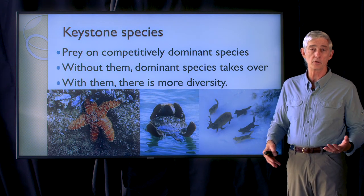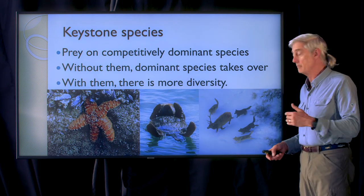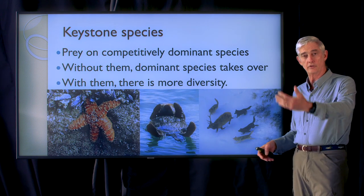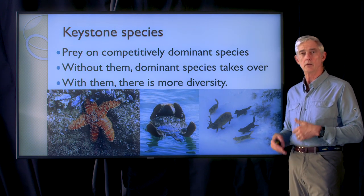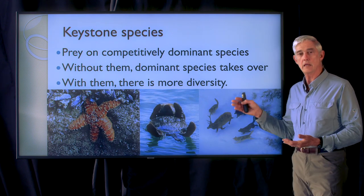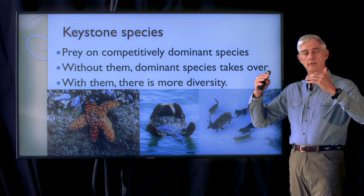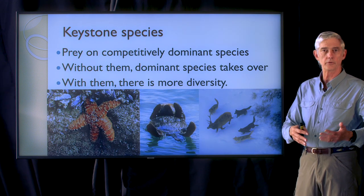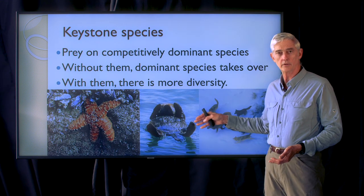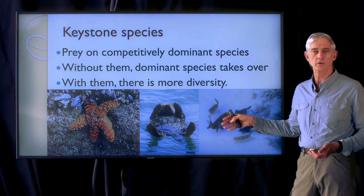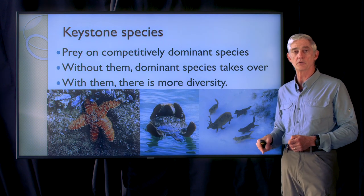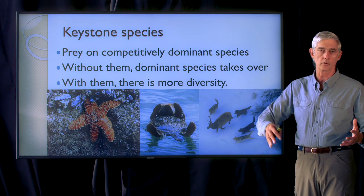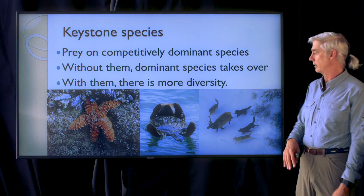Sea otters have also been called keystone species. By eating sea urchins and abalone that consume kelp, sea otters keep the herbivores down in population size and allow the kelp forest to grow. When sea otters were hunted to near extinction in the 1800s, sea urchin populations exploded and kelp forests were chewed down to their bare nubs.